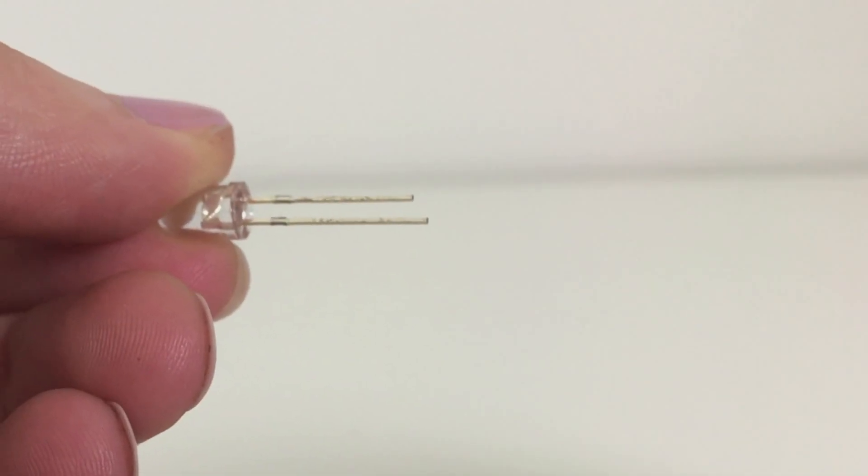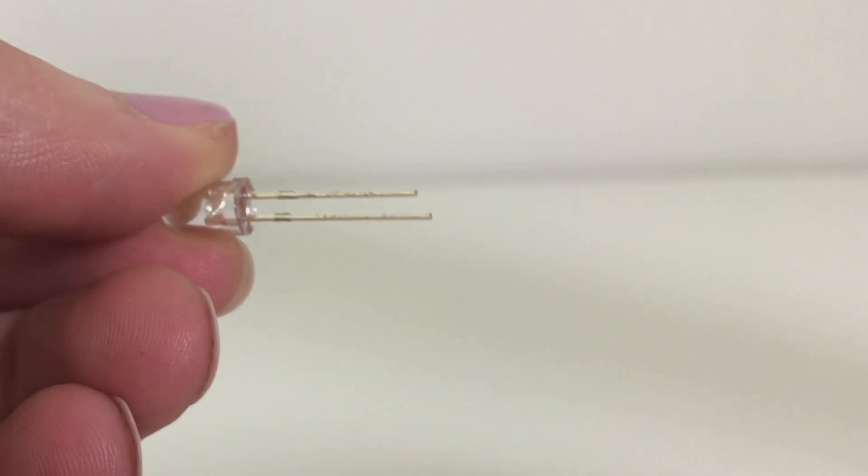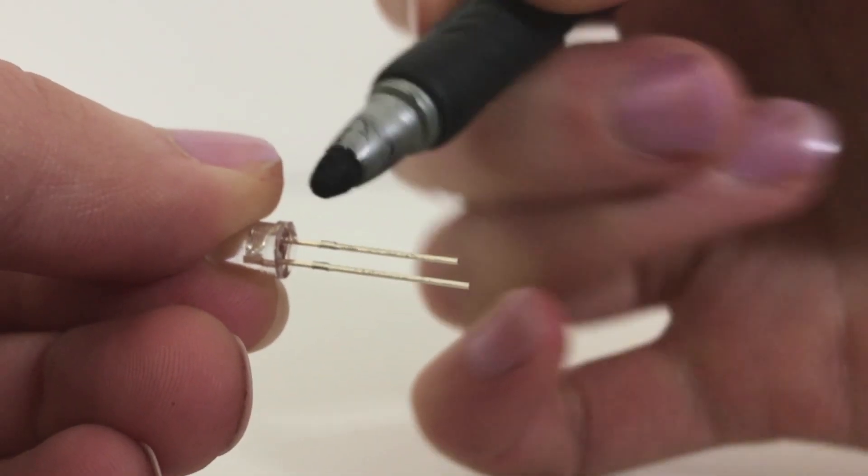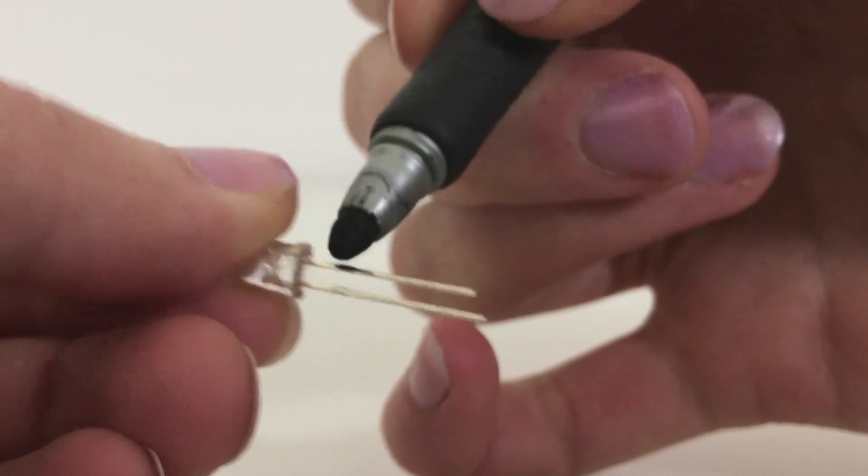To start I like to mark the shorter side, or cathode, of the LED with a marker. This step is entirely optional, but it will make it a lot easier to work with later by taking out the guesswork of how to arrange your LEDs.